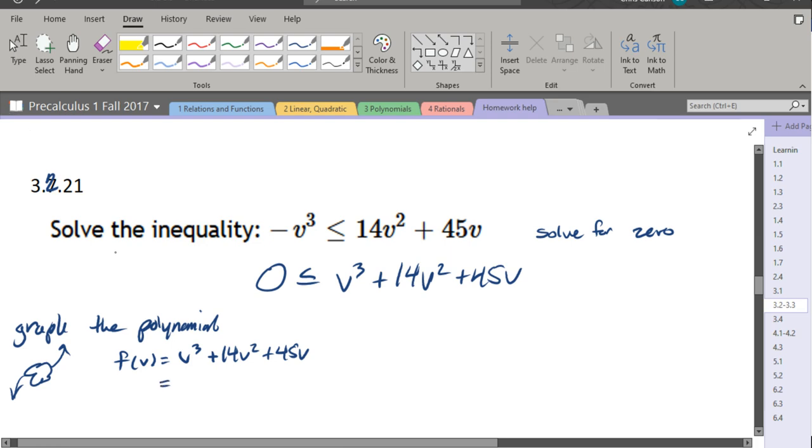So we need to know the x, or in this case, the v intercepts. So we're going to factor, and I can already see factoring a v out of here will be smart. What are we going to do next? Let's see if we can factor again. We're going to try to factor and get lucky. 45 has a few factors, but not too many.